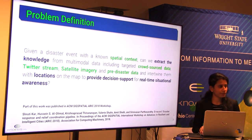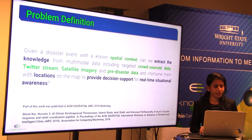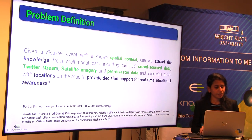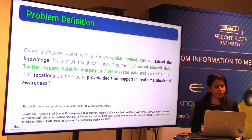Given a disaster event with a known spatial context, can we extract knowledge from multimodal data — including targeted crowdsourced data, Twitter stream, satellite imagery, and pre-disaster data — and intertwine them with locations on the map to provide decision support for real-time situational awareness?